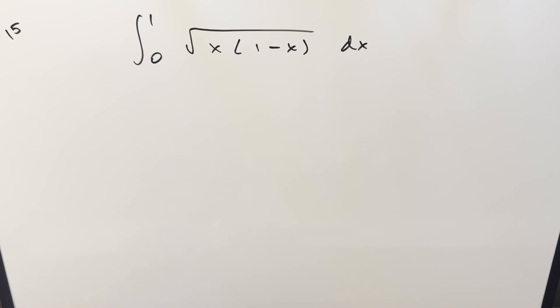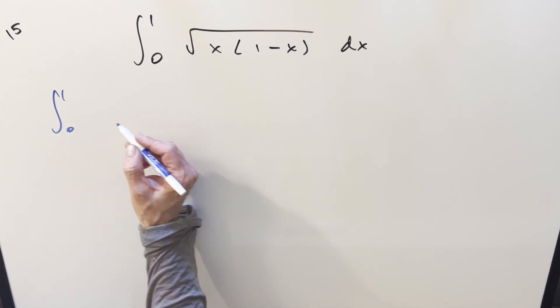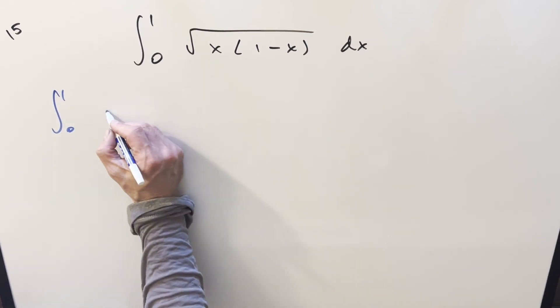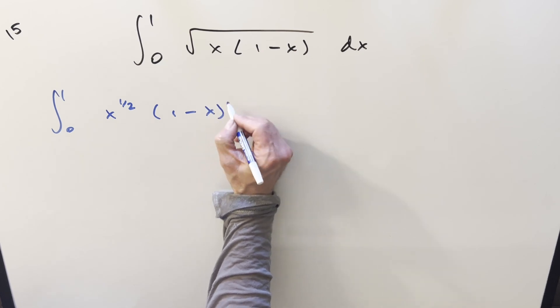So here we've got the integral from 0 to 1, square root of x times 1 minus x. I think there's a couple different ways. I think you could probably complete the square. What I want to do instead is let's actually just rewrite it and split it up. So I'm going to write this as x to the 1 half times 1 minus x to the 1 half.